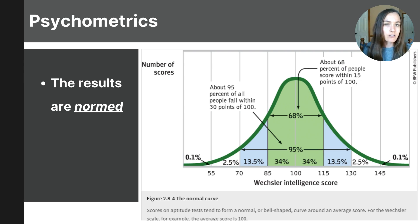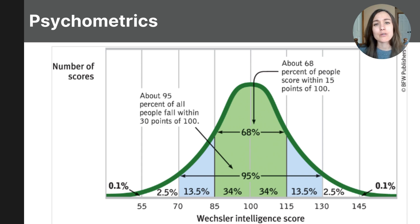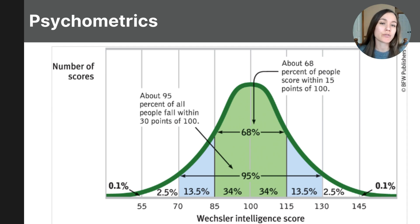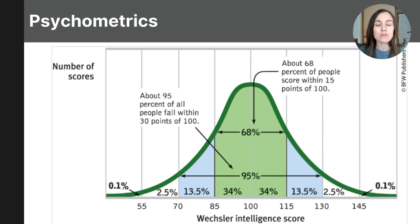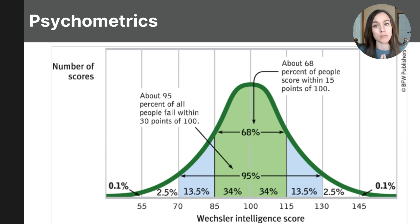Before moving on, let's do a little review on distribution curves. In unit zero you learned that this shape is called a bell curve or a normal curve. This bell curve shows how people score on IQ tests. The x-axis or horizontal axis represents the intelligence scores, while the vertical y-axis shows the number of people who received each score. Let's look at the WAIS data curve to understand standard deviation. Standard deviation shows how spread out scores are from the average or mean score.